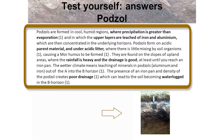The wetter climate means leaching of minerals in the Podzols — aluminium and iron are leached out of the A horizon into the B horizon. The presence of an iron pan and the density of the Podzol creates poor drainage, which can then lead to the soil becoming waterlogged in the B horizon.